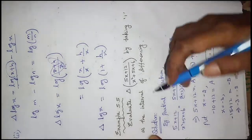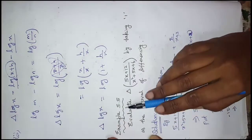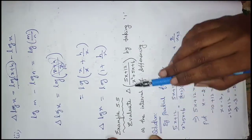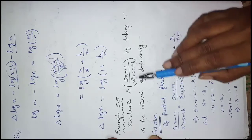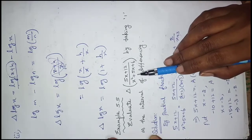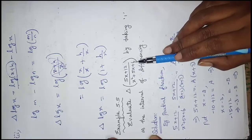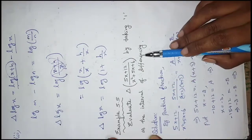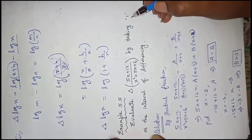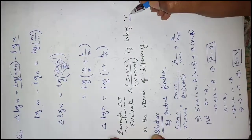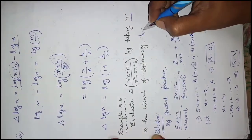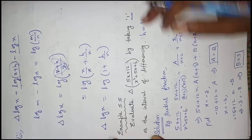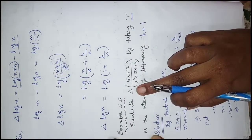Hi children. Next we will see example 5.5: evaluate delta of (5x + 12) divided by (x² + 5x + 6), taking 1 as the interval of differencing. Here h value is 1. Delta is the forward operator.